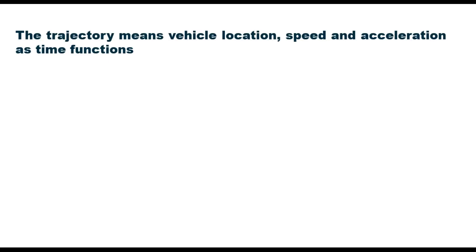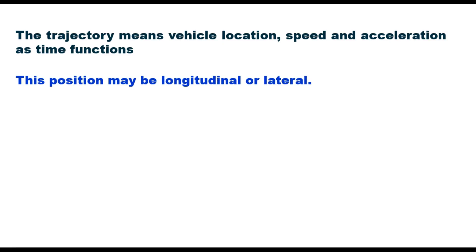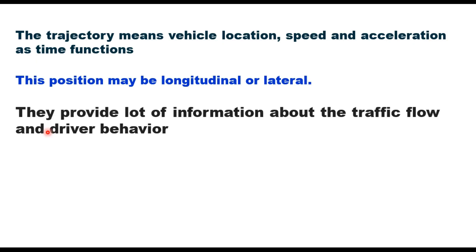Today we shall discuss vehicle trajectory — what is the meaning and what are the applications of vehicle trajectory. The trajectory means vehicle location, speed, and acceleration as a function of time. This position may be longitudinal or lateral. This is the output of a complex movement mechanism steered by a driver. Vehicle trajectory indicates and provides a lot of information about traffic flow and driver behavior.